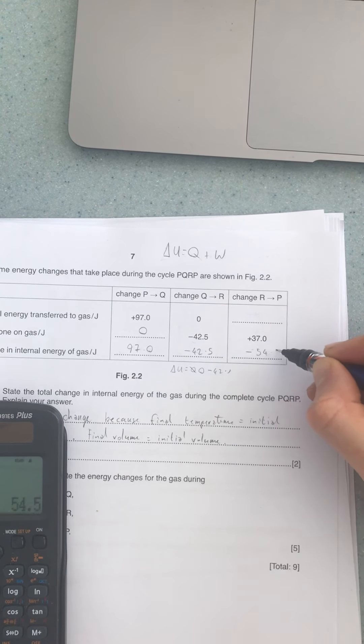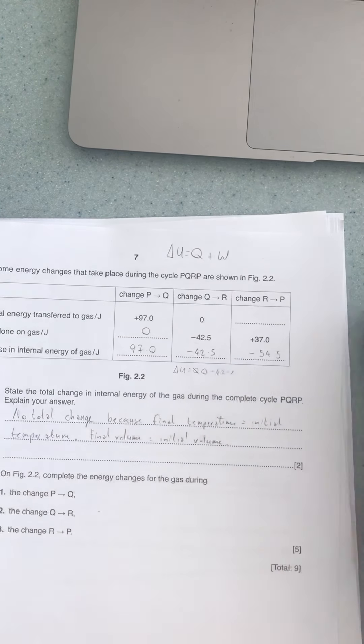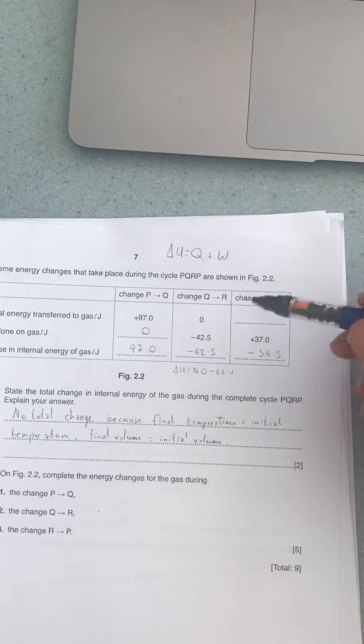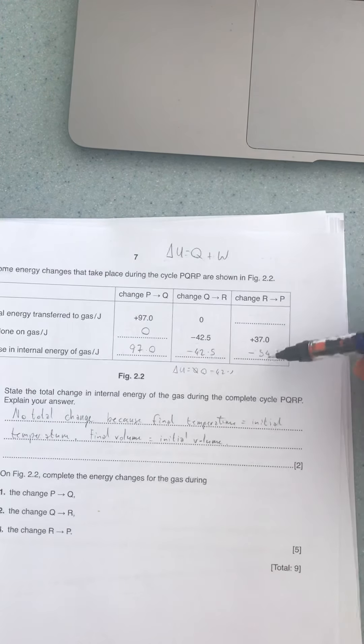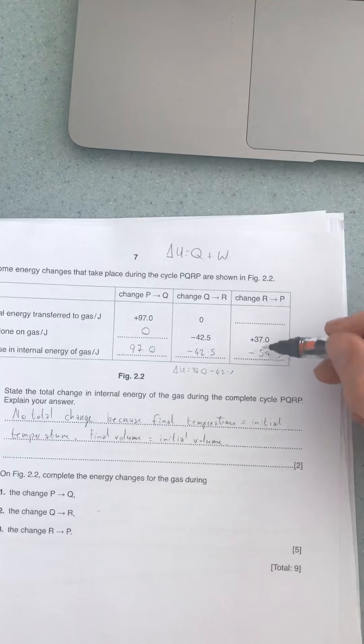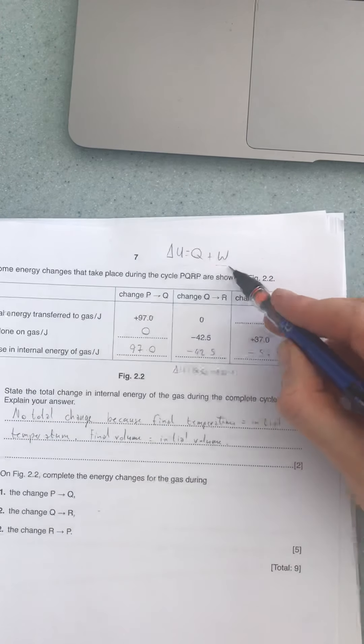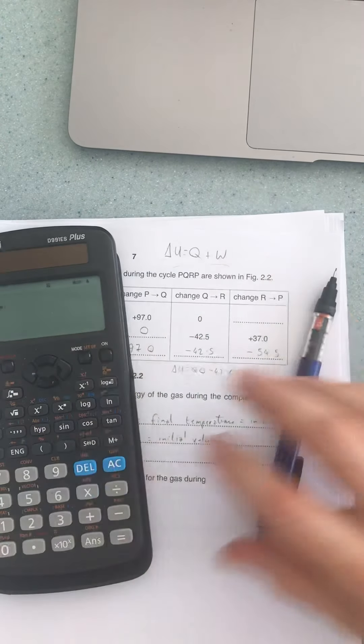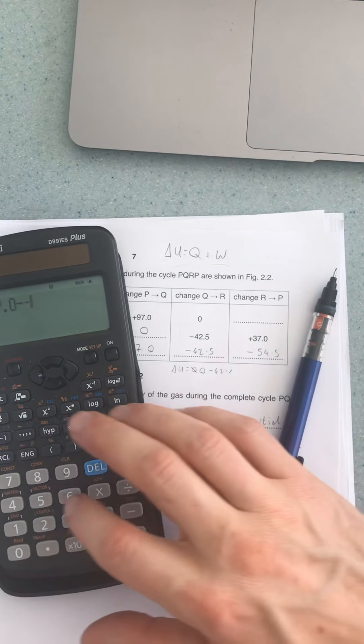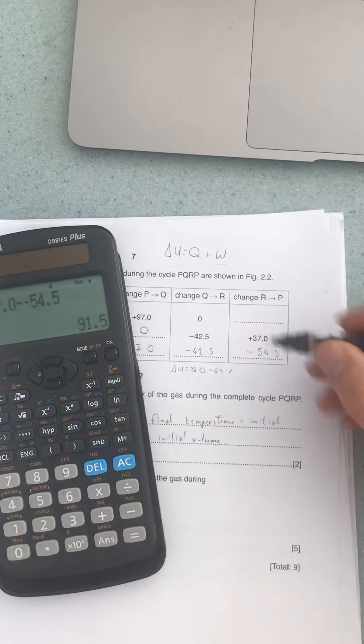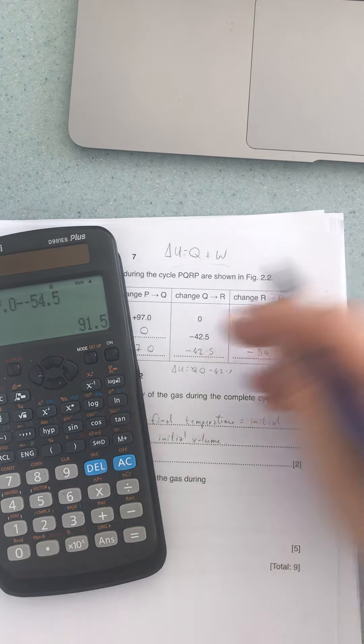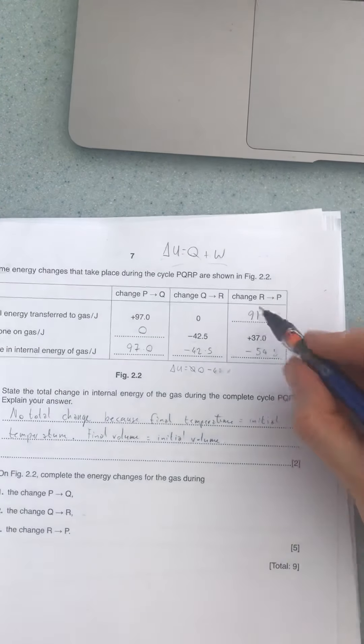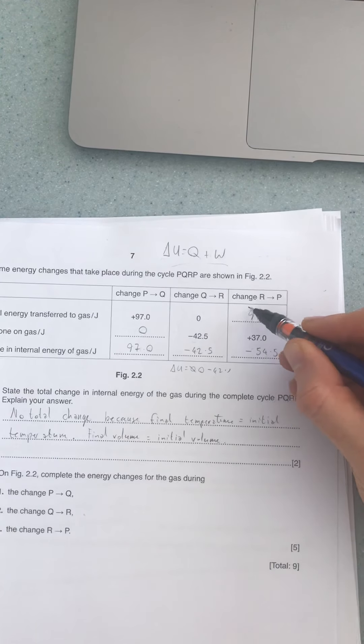And then last of all we need to look at the thermal energy transferred to the gas. It's got to cool down. Let's look at this here. So we've got negative 54.5 and 37.0 as well, so that means the thermal energy is just the difference between these two. So we just do 37.0 minus negative 54.5, and we get 91.5.